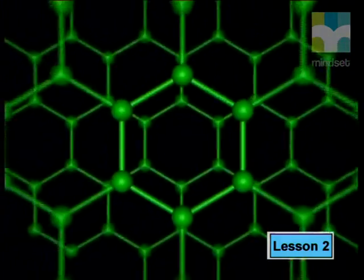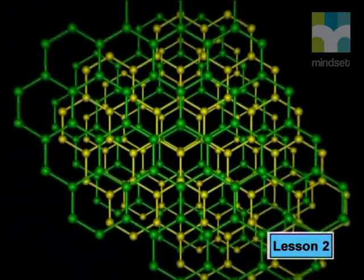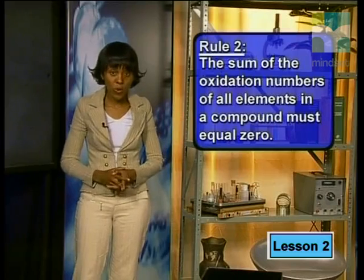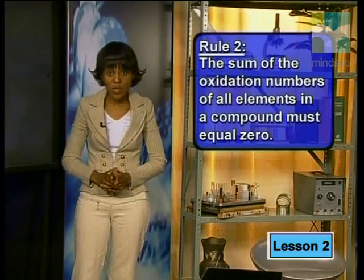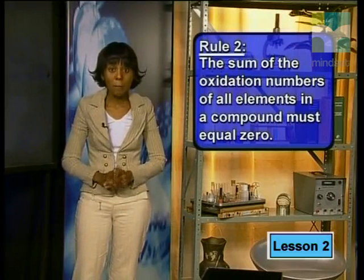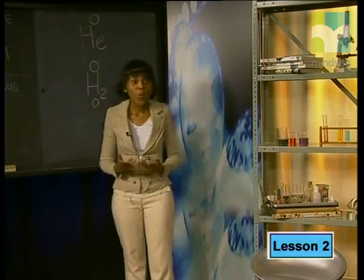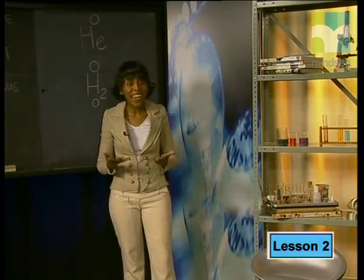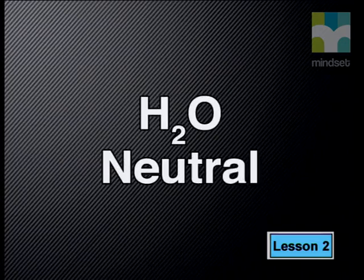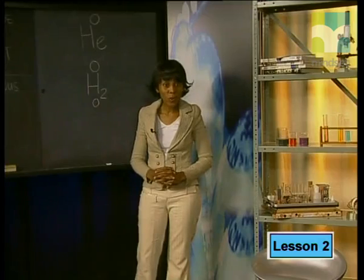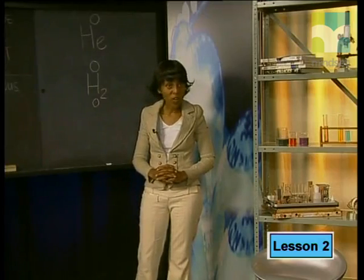Even where millions of atoms bond together, as in carbon or copper, the oxidation number given to these atoms is zero. The second rule for assigning oxidation numbers reads: the sum of the oxidation numbers of all the elements in a compound must equal zero. Since all compounds are neutral overall, the oxidation numbers for compounds must also add up to zero. We can write this total oxidation number below the formula of the compound.